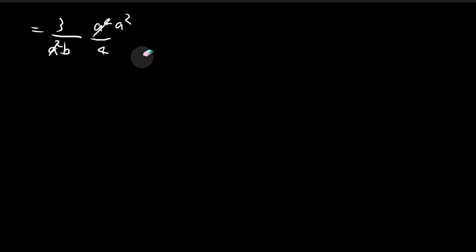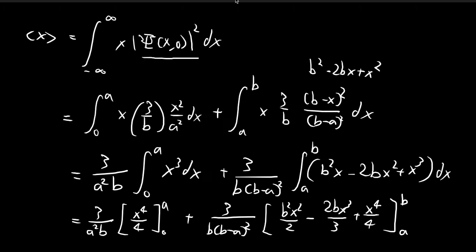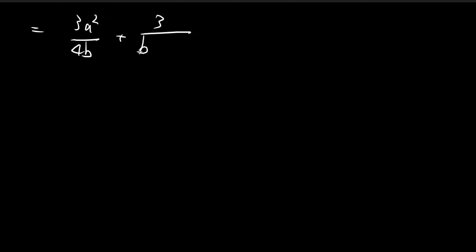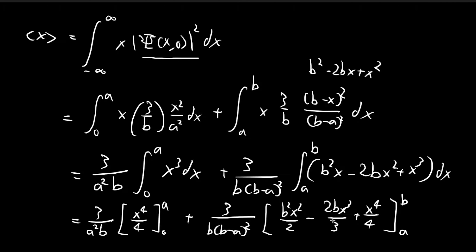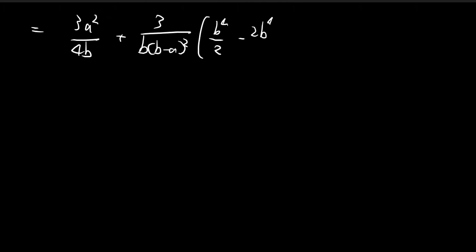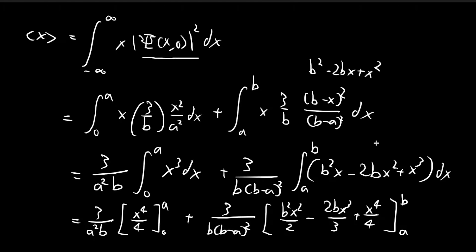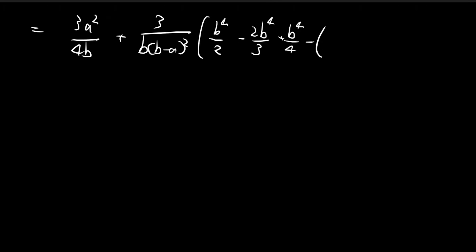The first integral simplifies to 3a squared divided by 4b. For the second integral, the constant is 3 divided by b times (b minus a) squared. Substituting in b first gives b to the power of 4 divided by 2, minus 2b to the power of 4 divided by 3, plus b to the power of 4 divided by 4. Then we subtract the terms with a substituted in: b squared a squared divided by 2, minus 2b times a to the power of 3 divided by 3, plus a to the power of 4 divided by 4.